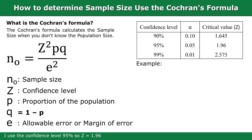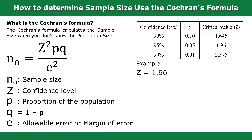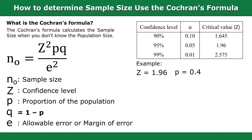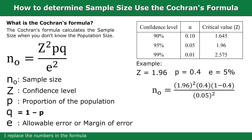Example: I use the confidence level 95%, so Z equals 1.96. I use the proportion of the population as 0.4. And I use the margin of error of 5%. I reflect the numbers in the formula. So the sample size is 368.79, approximately 369.